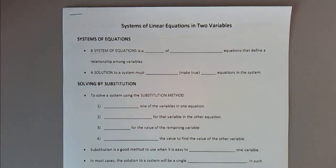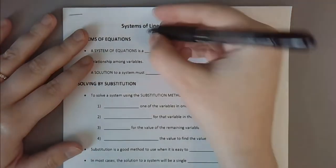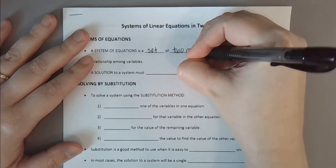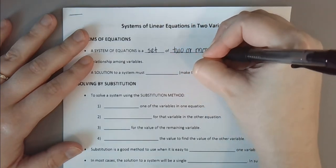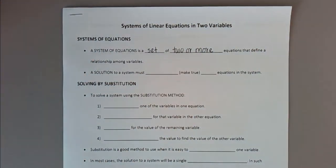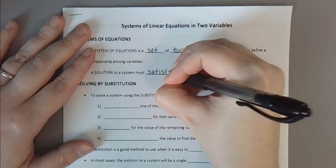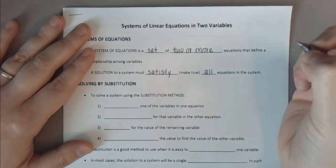In this video we're going to discuss systems of linear equations in two variables. Picture a system of equations: two variables, two equations. A system of any type is a set of two or more equations that define a relationship among whatever variables we have in the system. When we talk about solving a system of equations, anything we're proposing as a solution must satisfy — in other words, it must make true — all equations in the system.